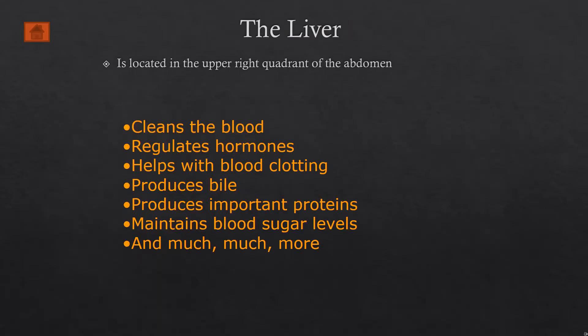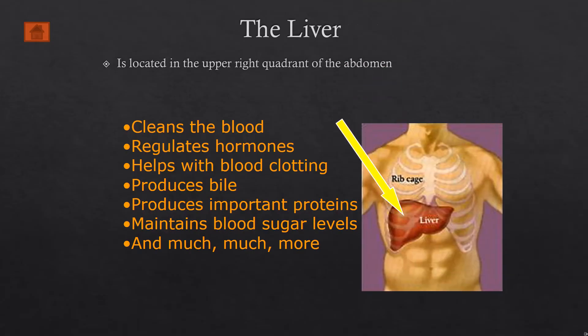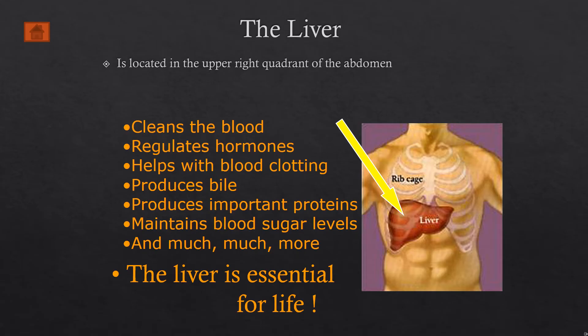Situated in the upper right quadrant of the abdomen is our liver. This vital organ has a lot of functions including detoxification of the blood, regulation of hormones, blood clotting, bile production, and the production of important proteins. It also helps in the maintenance of blood sugar levels and much more. So this really tells us that the liver is essential for life, and any perturbation to its normal functioning is going to affect our health greatly.